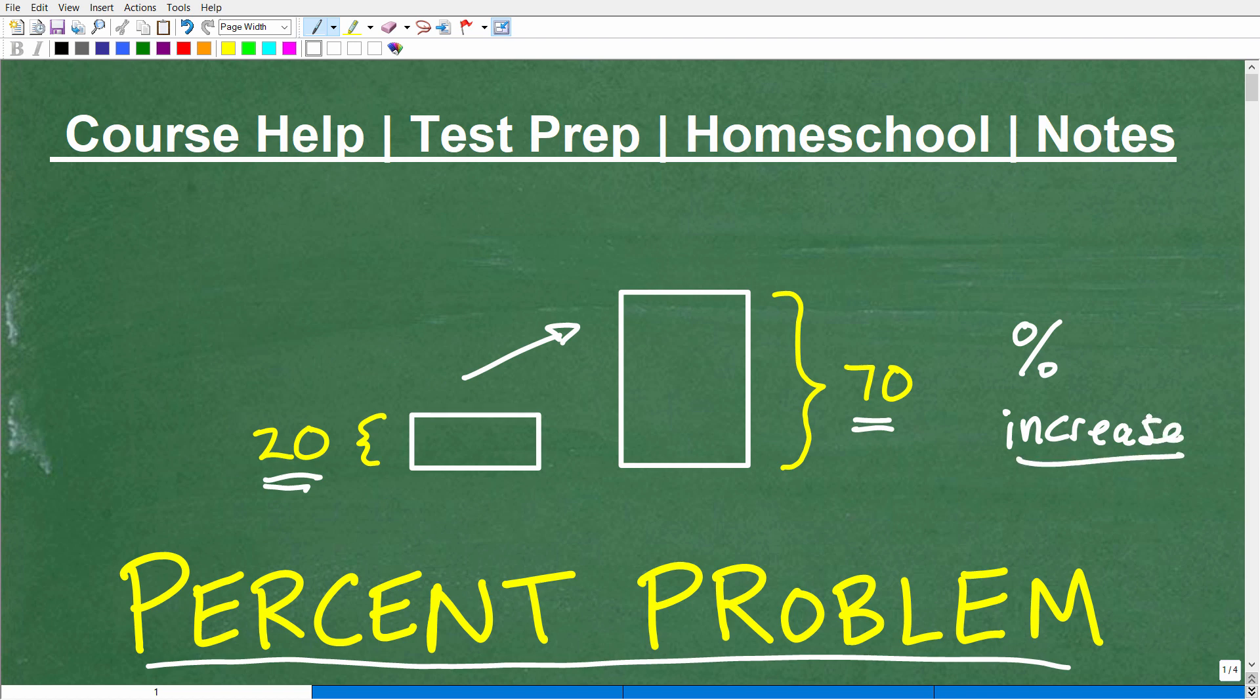And the percent of increase and the percent of decrease are very common areas that students confuse. So let's go ahead and see if you can do this. If you think you can actually get that answer without guessing, go ahead and put the correct answer in the comment section. What is the percent of increase? We start from 20, we end up at 70. I'm looking for the percent of increase. But if you're not quite sure, stick around for a couple of minutes and I'll show you exactly how to handle this percent of increase problem.